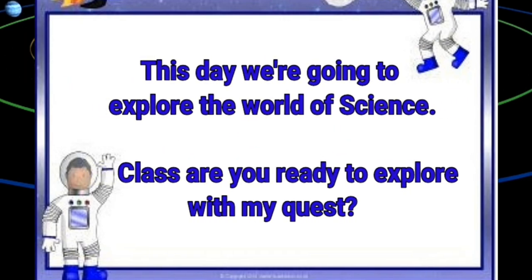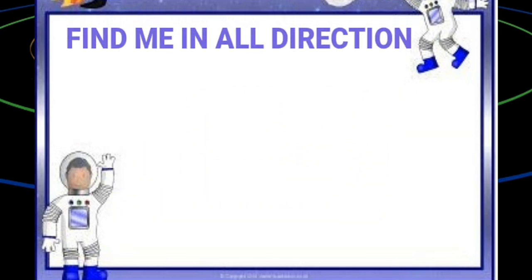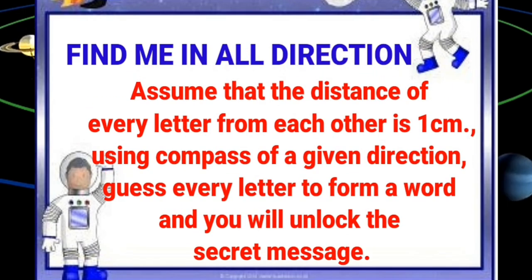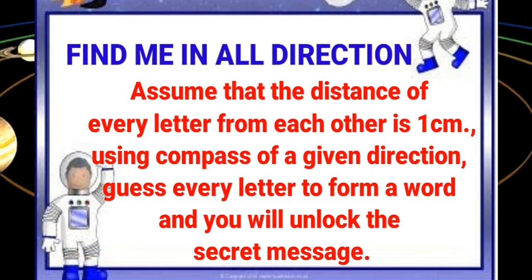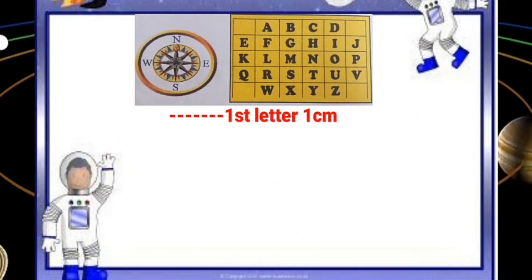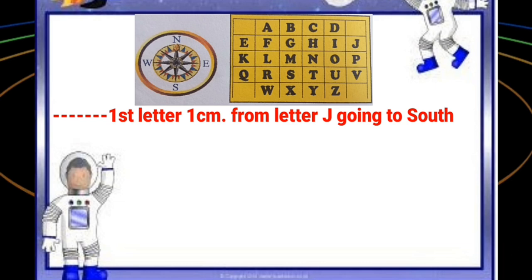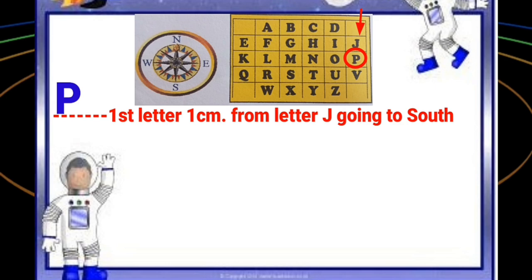Now, establishing your purpose for the lesson. We're going to explore the world of science — are you ready? Quest: find the letters in all directions. Assume the distance between every letter is one centimeter, using compass directions. Guess every letter to form a word and you will unlock the secret message. I'll do it first: first letter, one centimeter from letter J going south — what letter is it? Letter P.